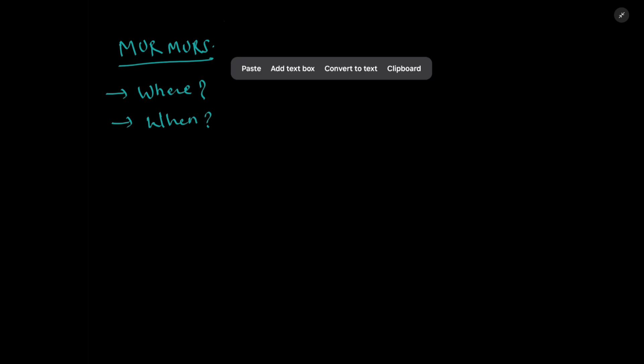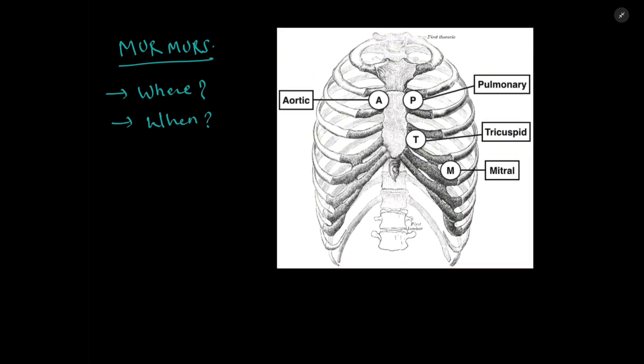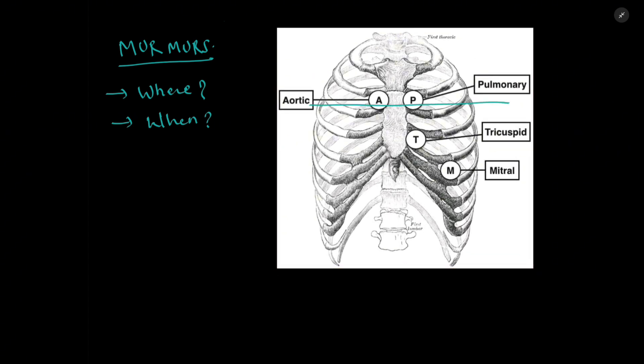And for the auscultatory areas, I have this figure that shows different auscultatory areas. On the second intercostal space, we have aortic and pulmonic area. On the fourth, we have the tricuspid, and on the fifth, on the mid-clavicular line, we have the mitral area.